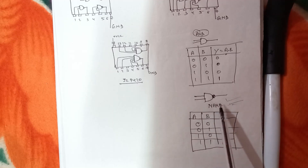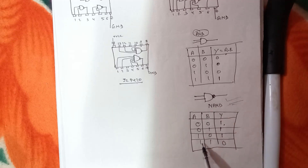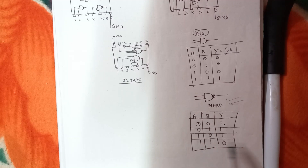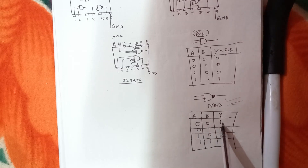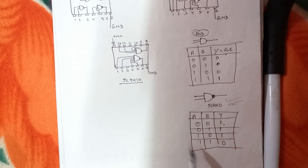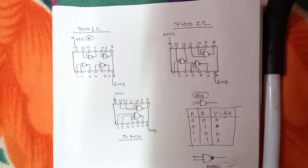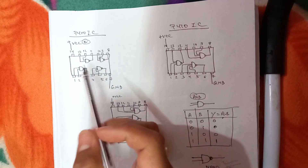In a NAND gate, if any one of the inputs is zero, the output is high. Only when both inputs are high will the output be low. If both inputs are low, we obviously get a high output. This is the working of the NAND gate.